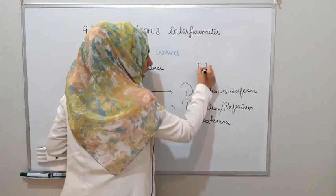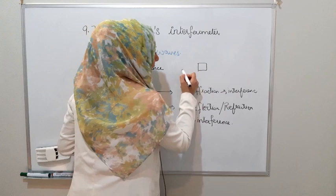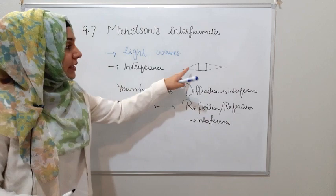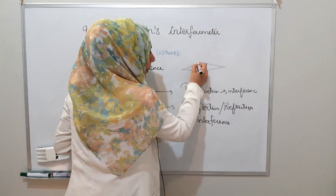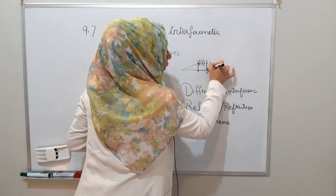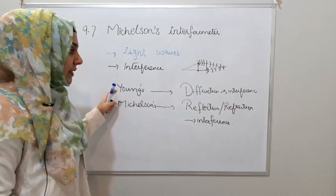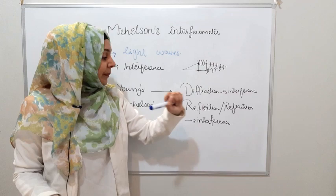In diffraction, there is bending of waves. If we have a small slit, light comes through it, and that bending of light waves is called diffraction. Secondary wavelengths are generated from that point, and from those secondary wavefronts, light interference occurs. So in the Young's Double Slit experiment, it is diffraction first, and after that the interference pattern is generated.